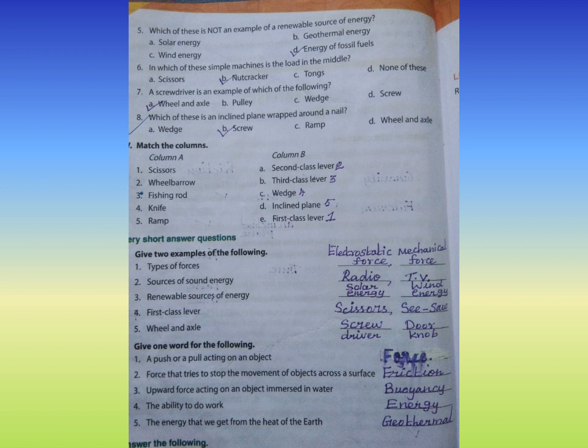Number three: Upward force acting on an object immersed in water. Answer: Buoyancy. Number four: The ability to do work. Answer: Energy. Number five: The energy that we get from the heat of the earth. Answer: Geothermal.